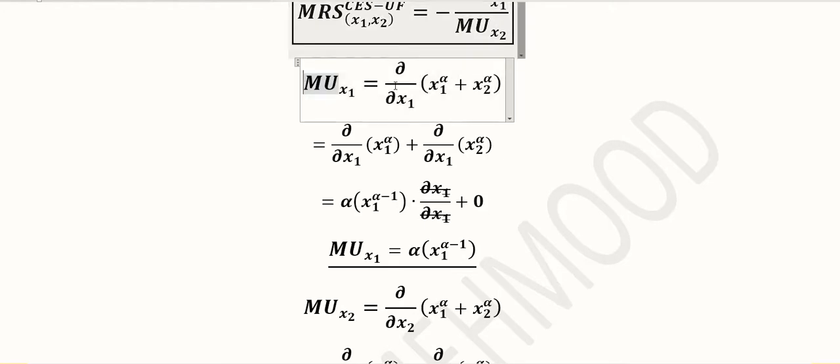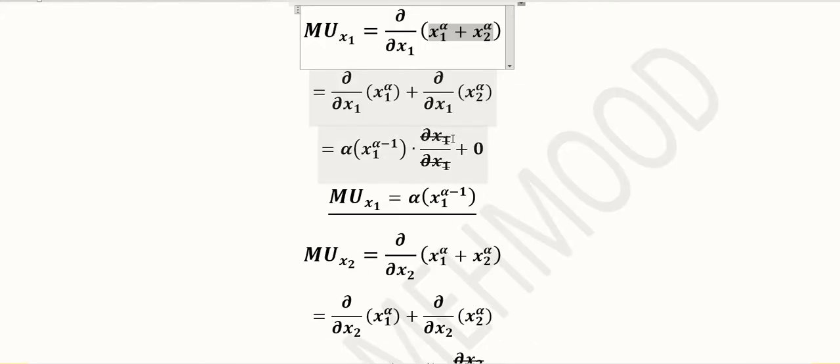So for the first good, we calculate the marginal utility simply by using the partial derivative with respect to the first commodity which is x1. You can see that the partial derivative is taken with respect to the first good. And this is the CES utility function. Now we are taking the derivatives of the two terms separately, applying the sum rule of differentiation. The second term should reduce to zero because it does not contain any x1 in it.